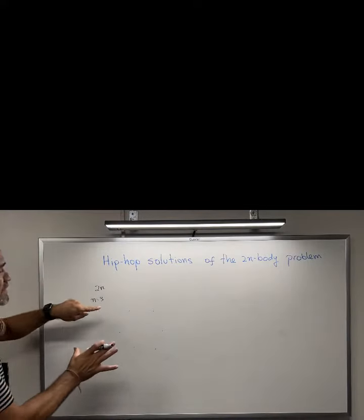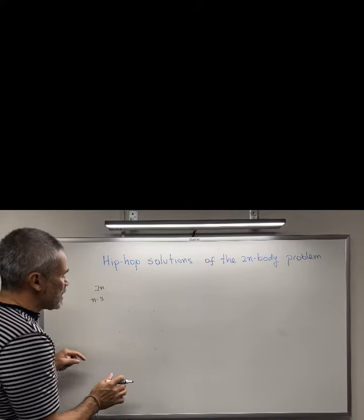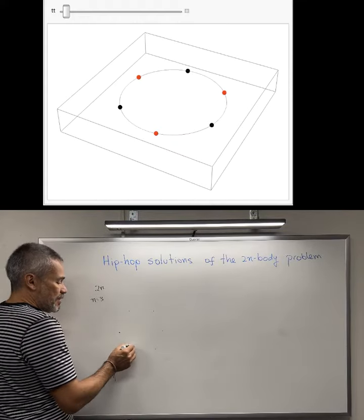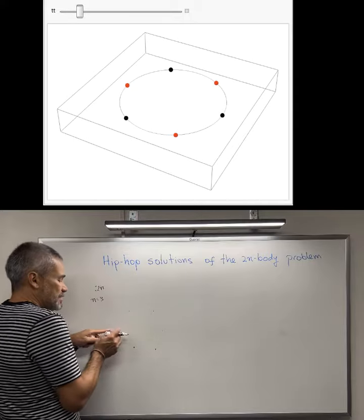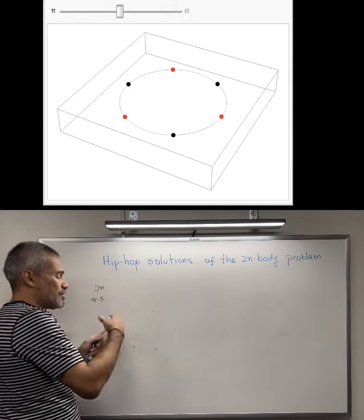Then we can set up initial conditions for the velocities so that the motion takes place in a perfect circle, and these six bodies move in a perfect circle. All of them share the same trajectory.